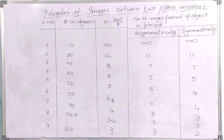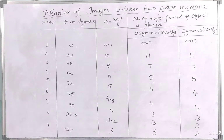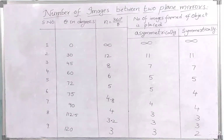Infinite images are formed when the angle between the two plane mirrors is zero. Coming to the second situation, the angle is 30 degrees. So 360/30 gives us 12. Since 12 is an even number, we do minus 1, giving 11 images. For the symmetrical case also, it will be 11.